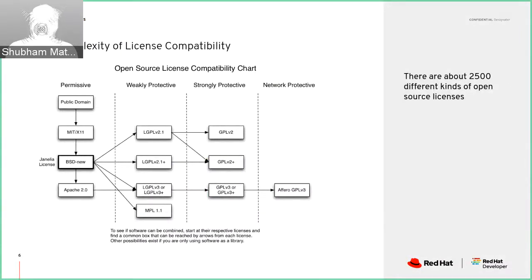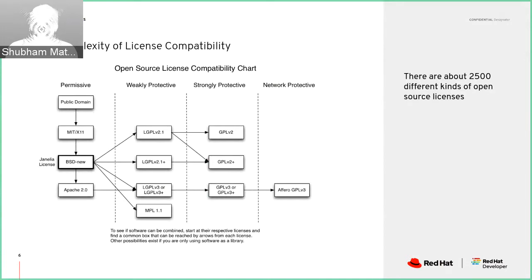Other than that, as we know there are about more than 2,500 different open source licenses. Each license can have a compatibility issue with other dependency licenses which you are using. If you are using multiple dependencies, they could internally have license conflicts. Along with that, there is a scenario when you want to know which type of license you should use for your stack. These are some things which we definitely face.